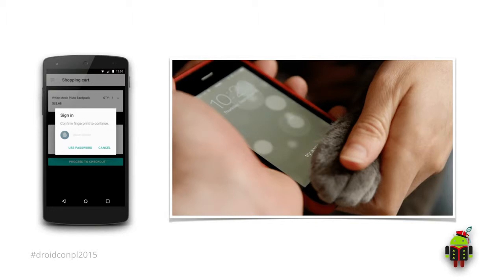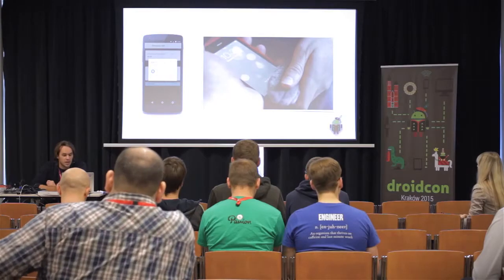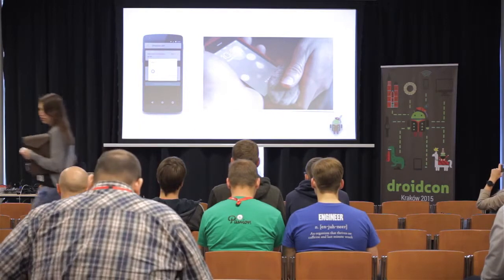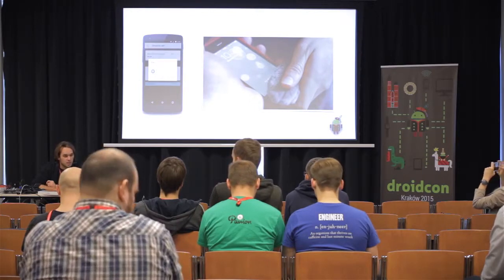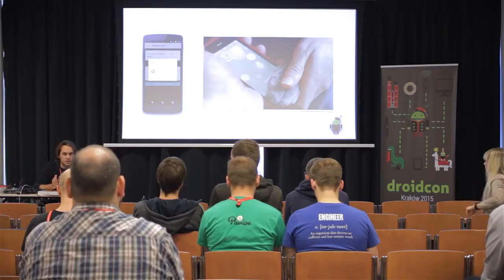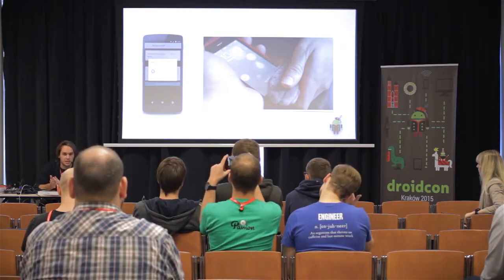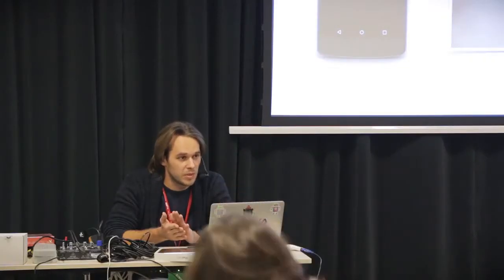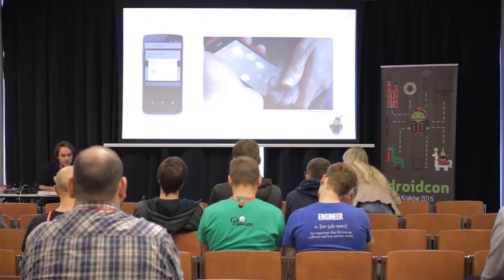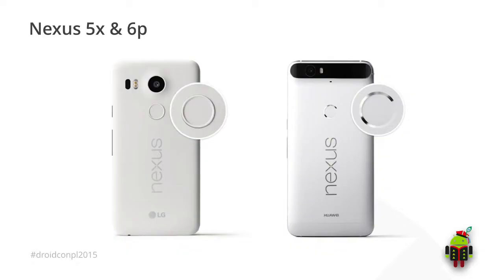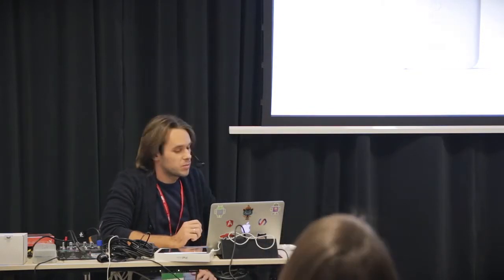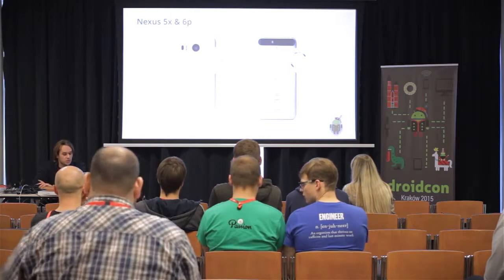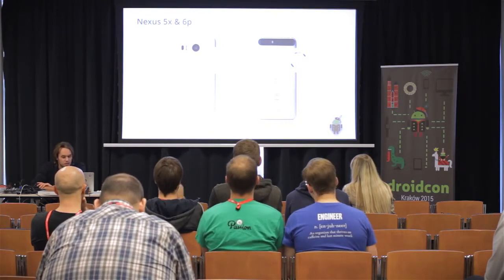Nobody likes typing in passwords — that's just annoying. Android Marshmallow brings us the new Android Fingerprint API. It's available for developers to integrate inside their own applications, and it allows us to protect sensitive data and authenticate payments, authorization, and a lot of interesting things. The first two devices that implemented this API were the Nexus 5X and 6P. The sensor's name is Nexus Imprint. It allows secure login and payments and is really the first implementation of this API.